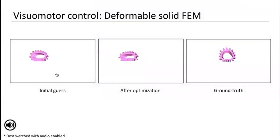In this experiment, we train a two-layer neural network policy to actuate a deformable solid object. The goal at the end of the simulation is for the object to achieve the target configuration shown on the right.